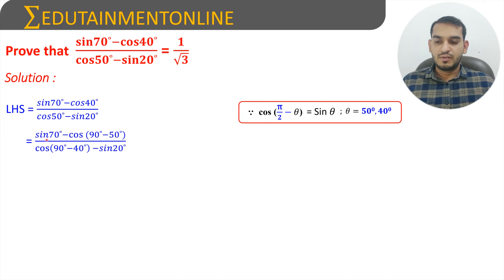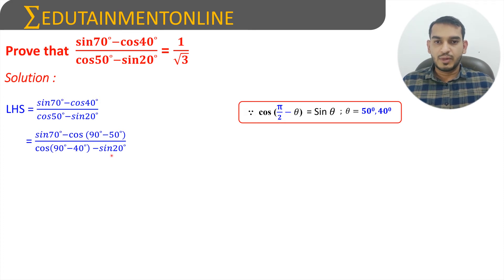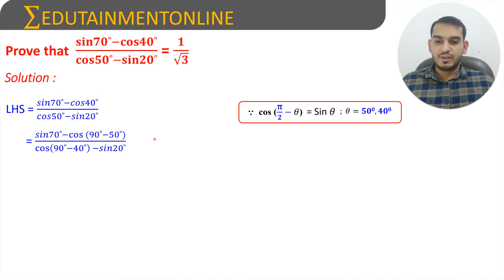So that will be sin 70 minus cos(90 degrees minus 50 degrees) — that is, 40 degrees is written as 90 minus 50 — divided by cos 50 which is cos(90 minus 40 degrees), minus sin 20 degrees. Applying the formula cos(pi by 2 minus theta) equals sin theta, we can write sin 50 degrees in the numerator and sin 40 degrees in the denominator.